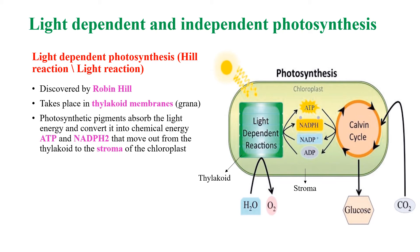Photosynthesis takes place in two steps. The first is light dependent photosynthesis and the second is light independent photosynthesis. Light dependent photosynthesis was discovered by Robin Hill, and hence it is also known as the Hill reaction.